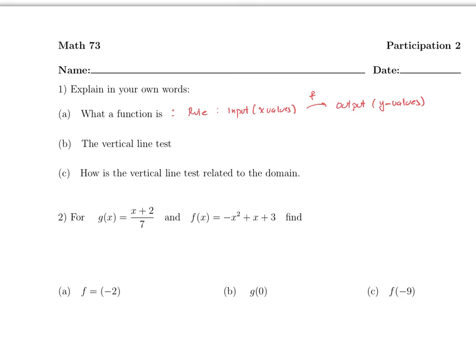The vertical line test is a test where you have a graph and you draw vertical lines. If the vertical line touches the graph only once, then it is called a function. It will be a function if all vertical lines touch the graph only once.